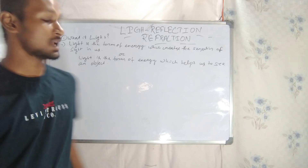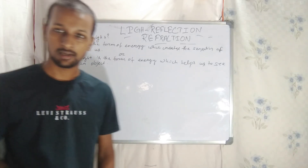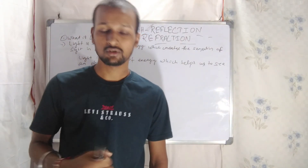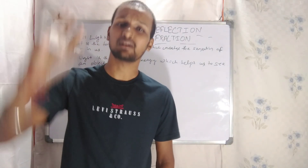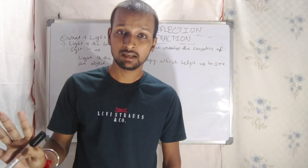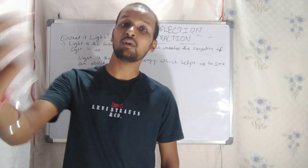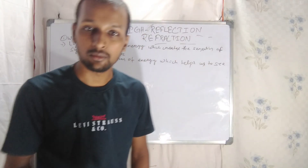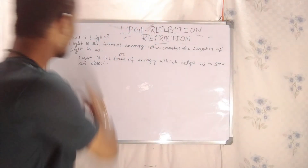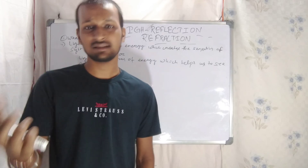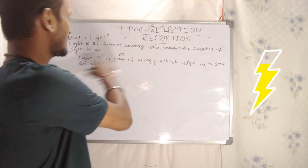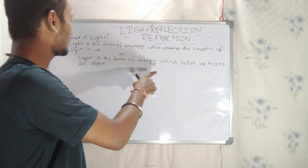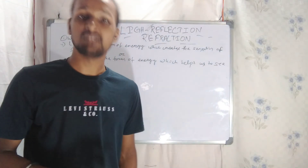Light is the form of energy which helps us to see an object. Light is one type of energy. So you have to write that light is the form of energy. In simple definition: light is the form of energy which creates the sensation of sight in us, or light is the form of energy which helps us to see an object.